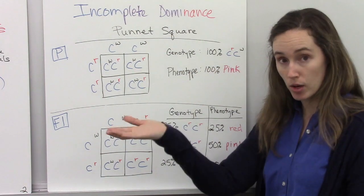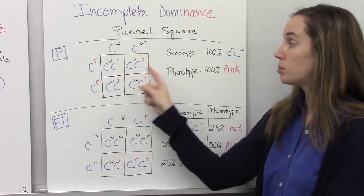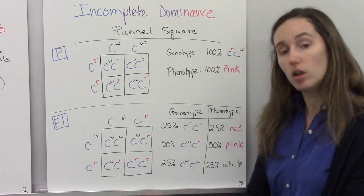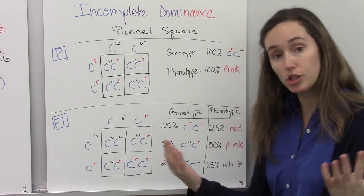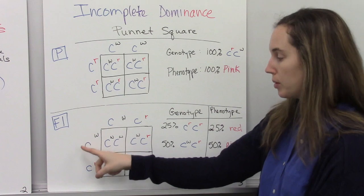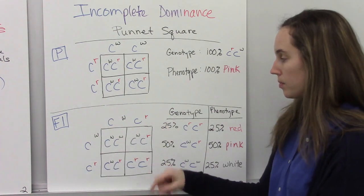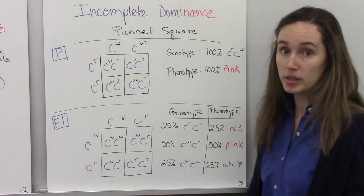Now, if we bred two of these pink flowered four o'clock plants together, their offspring will have a different ratio. So here I'm breeding a heterozygote here and here.